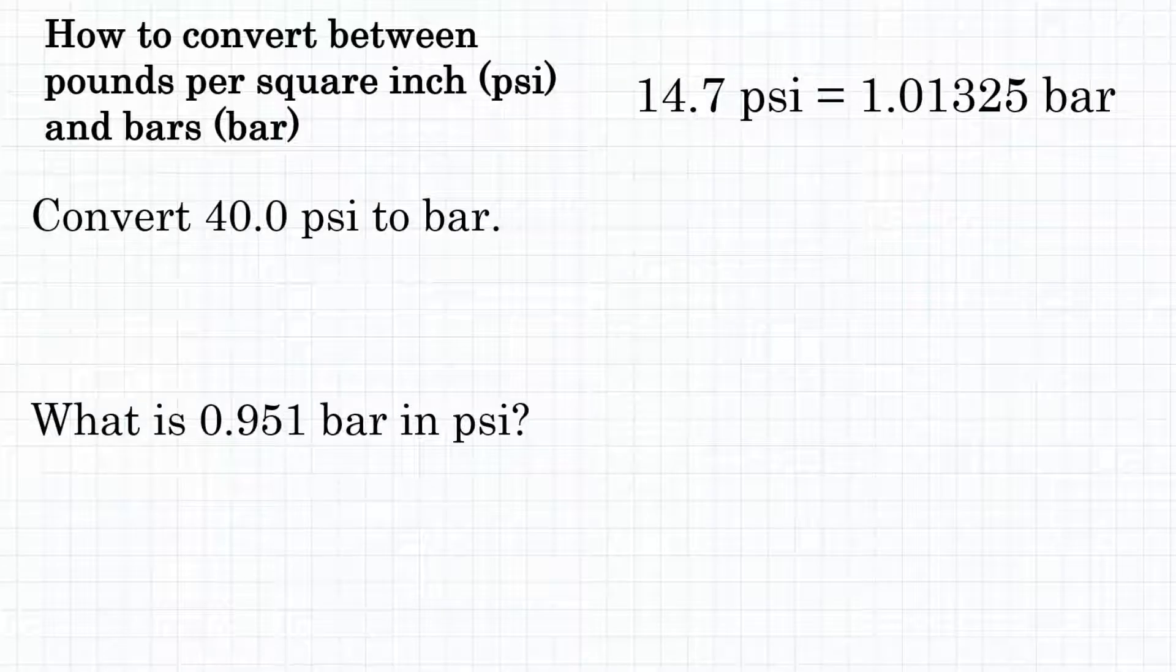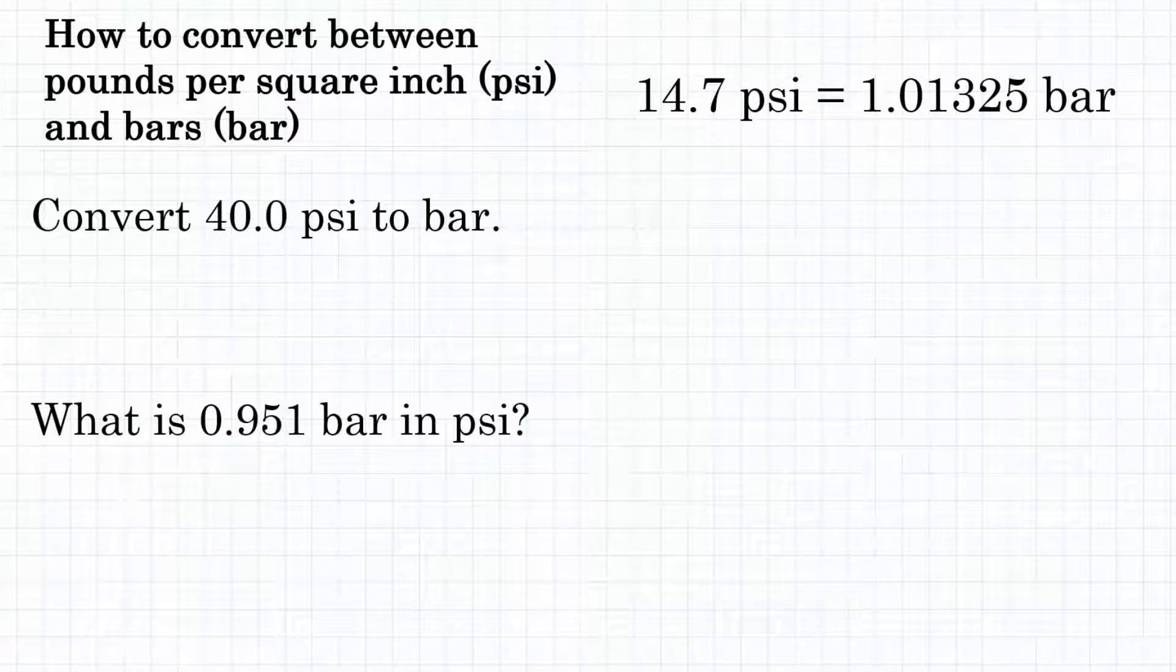Alright everyone, how do we convert between pounds per square inch and bars? So two pressure units, pounds per square inch and bars. If we want to convert between those two, how do we do that?